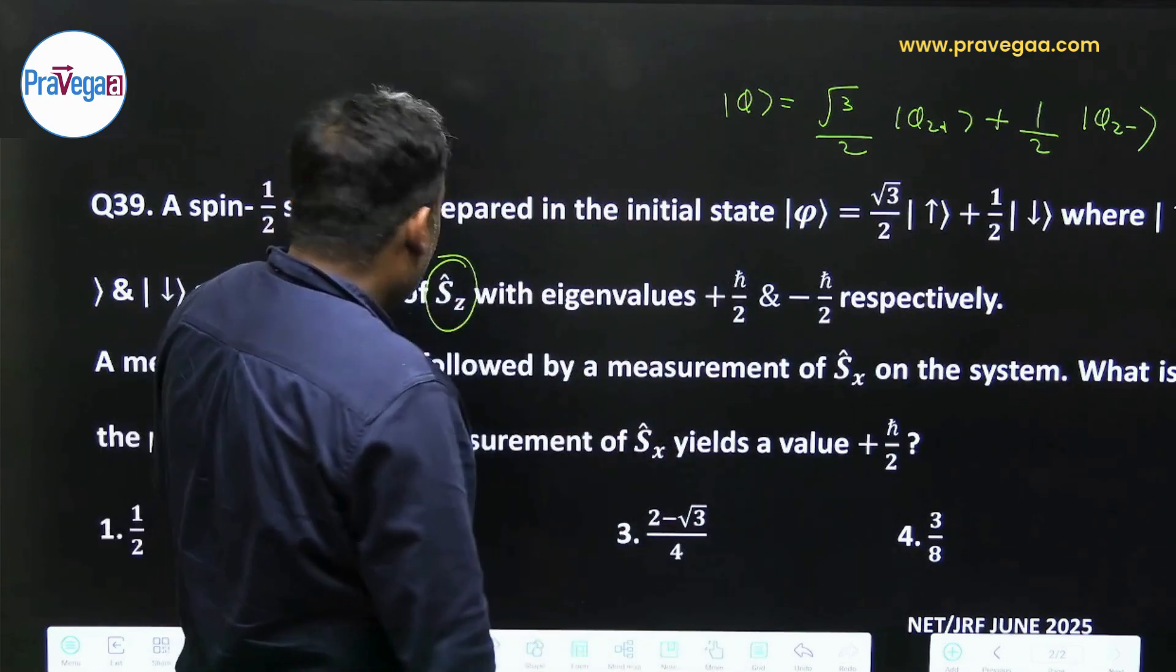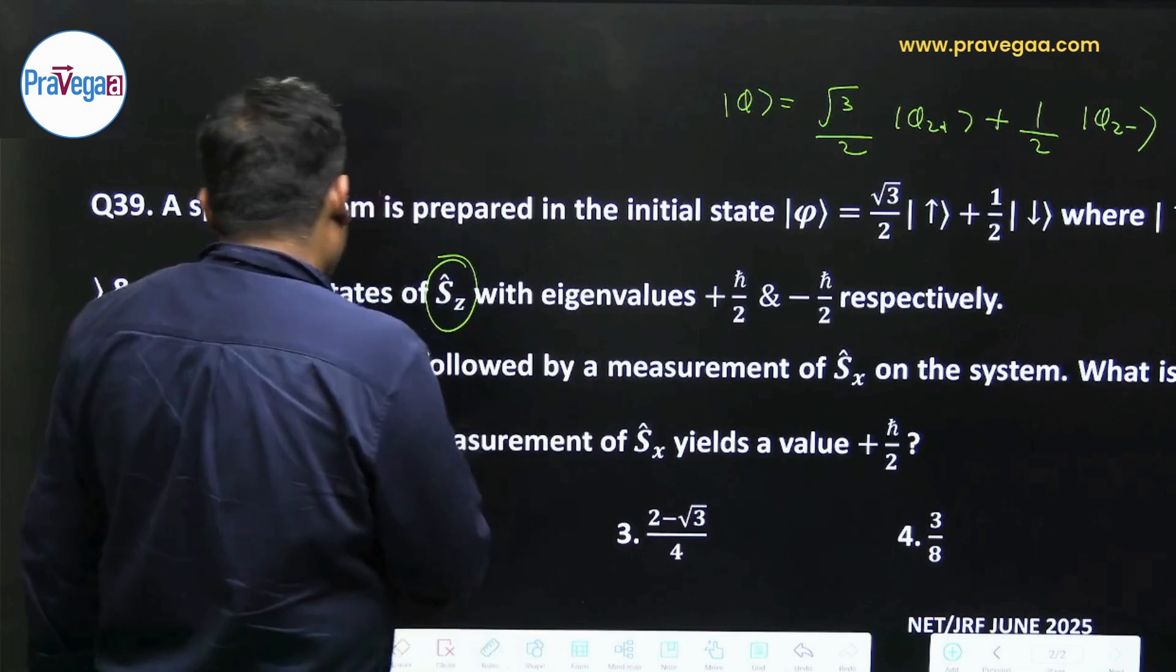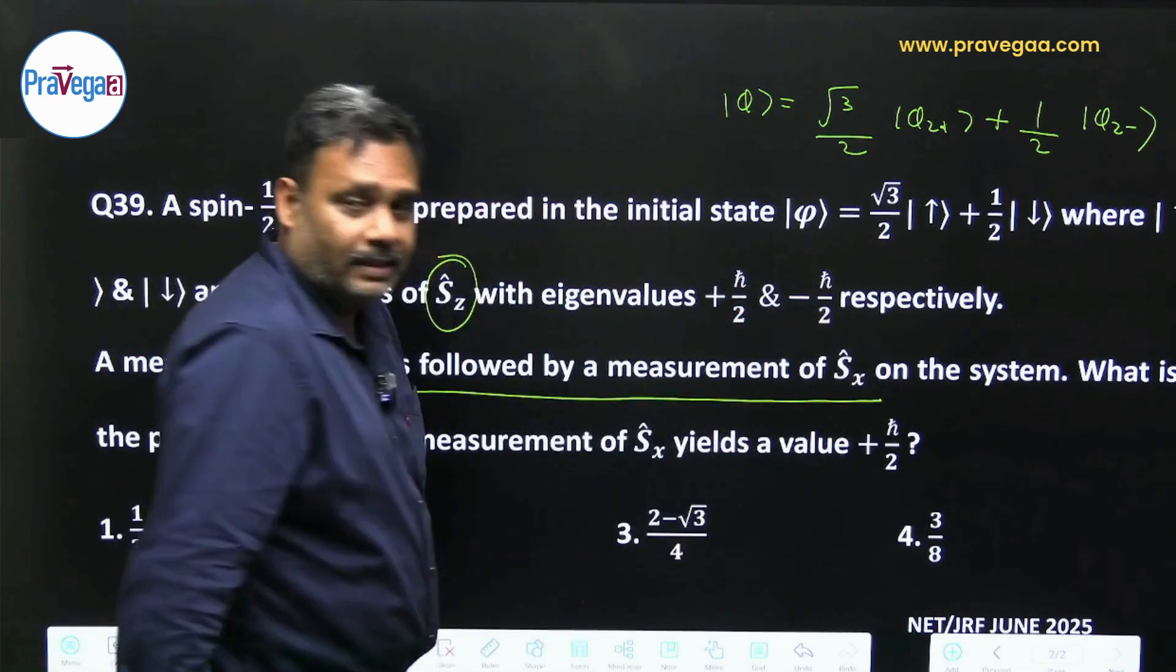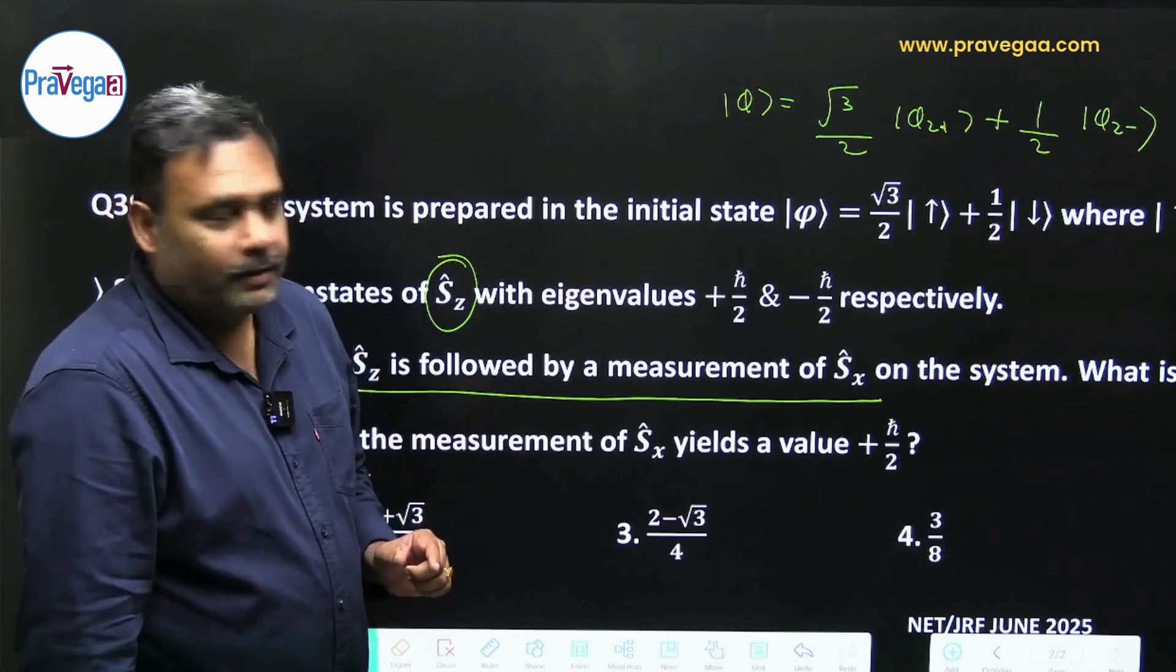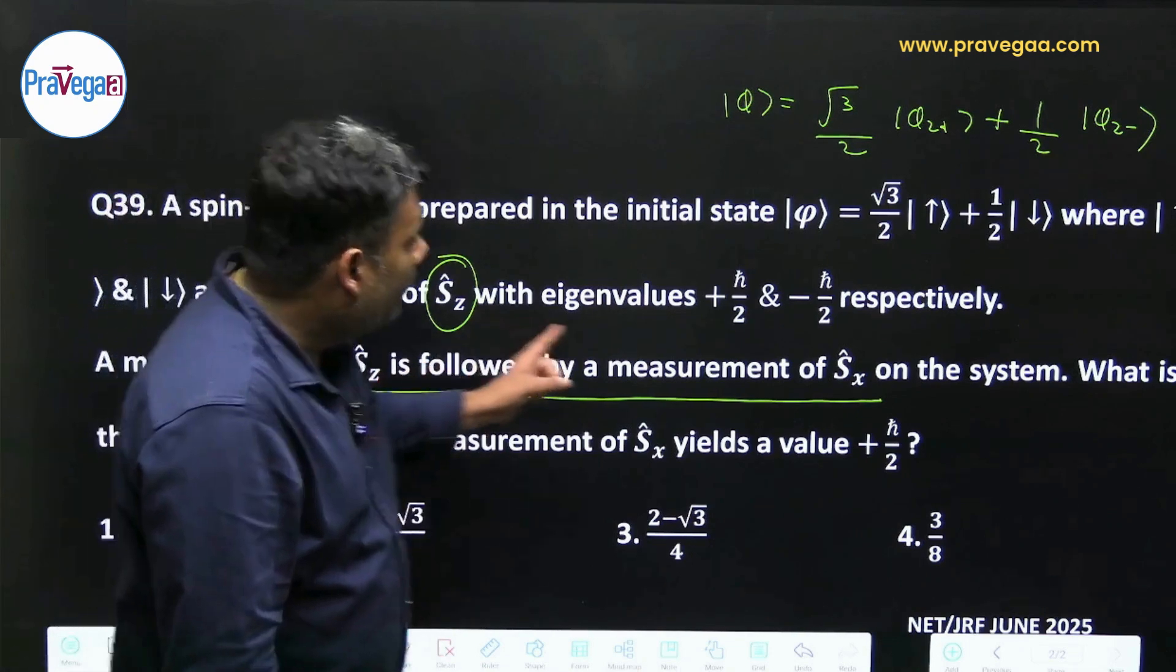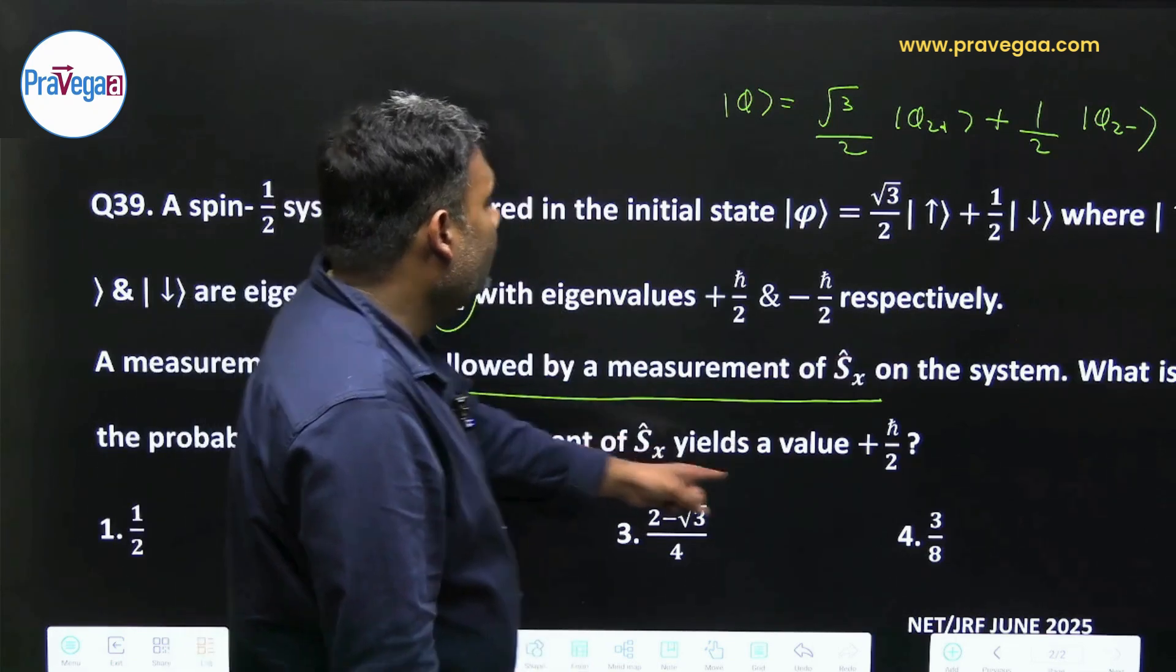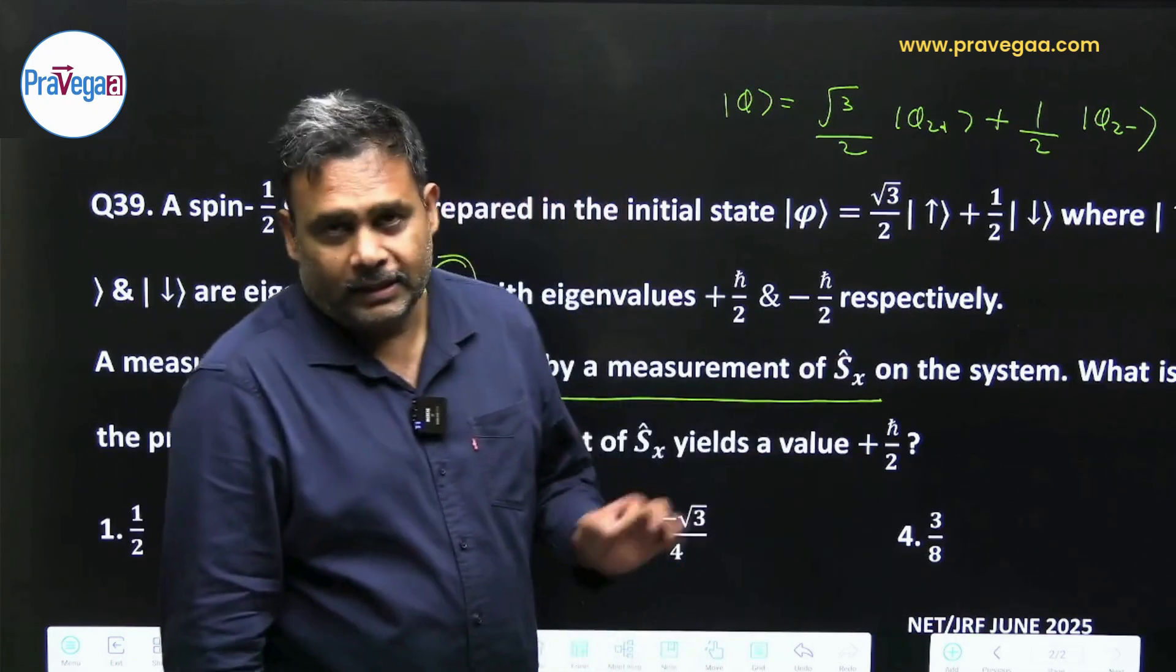A measurement - now look at this question, this line very carefully. The measurement of Sz followed by measurement of Sx. This is very important. The measurement of Sz is followed by measurement of Sx on the system. What is the probability that measurement of Sx yields ℏ/2?